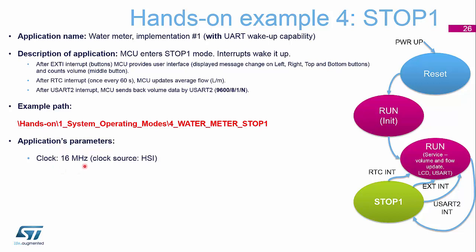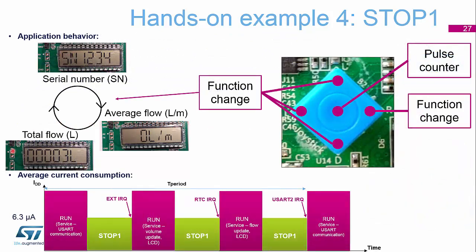The application uses a 16 MHz clock source. The multi-function button handles up, down, left, and right for function changes and incrementing the count. To simulate water flow we push the button. We expect to drop to about 6.3 microamps in stop mode, then wait for one of the events — button, RTC, or UART — to bring the device out of stop mode.